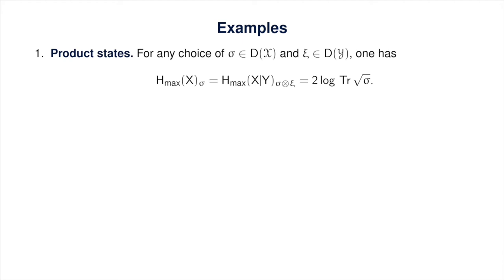Let's take a look at a few classes of states. In the case of product states, there is no correlation at all between x and y, and the conditional max entropy of x given y is just a function of the state of x — it's twice the log of the trace of the square root of the state of x. We can drop y from the notation and call this the max entropy of x. We have to be careful here, though, because unlike the min entropy, this is generally not consistent with the way people would interpret the term max entropy, which is often defined as the logarithm of the rank of the state.